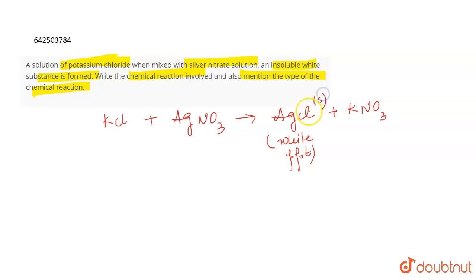So this AgCl is a solid white colored substance or a white colored precipitate which is formed. Now, if you look at the reaction very carefully, you see that the KCl in the reactant has changed to KNO3 in the product.